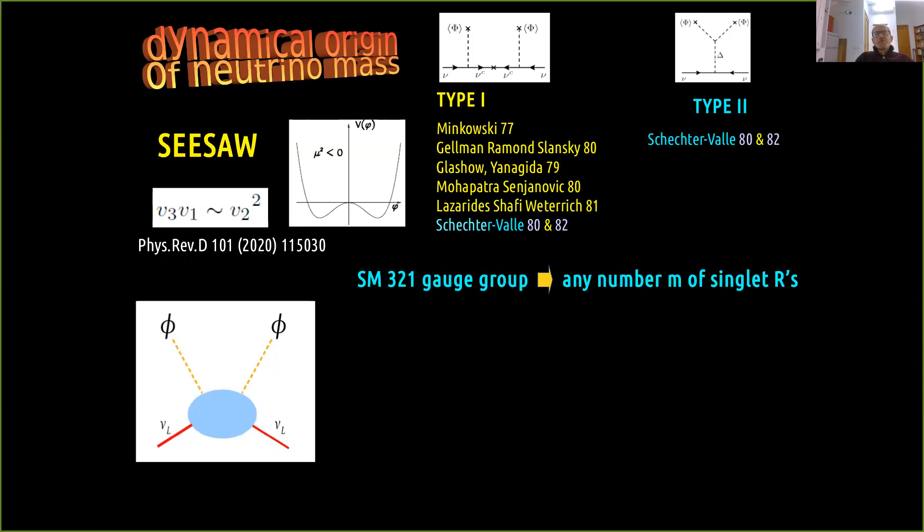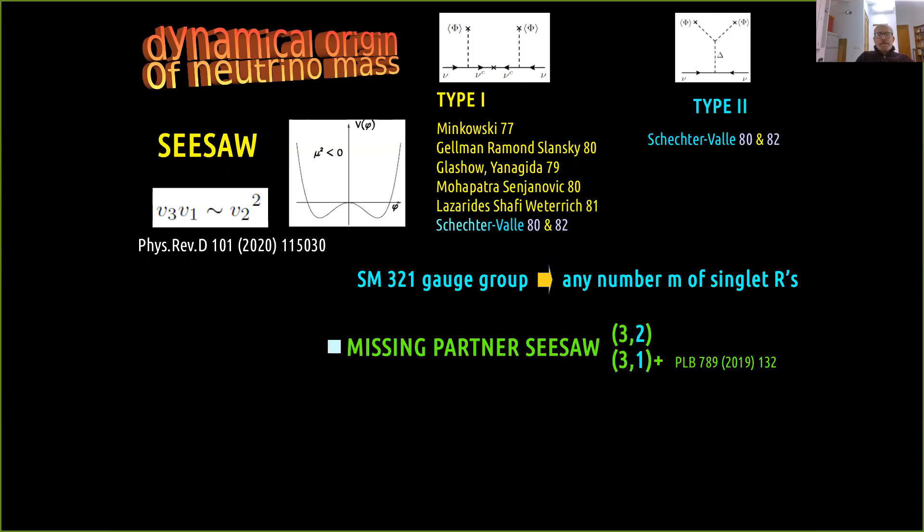Just by gauge symmetry. By classifying the seesaw just in terms of the standard model, we are completely free as to how many singlets we can consider. In particular, we may have less singlet neutrinos than doublet neutrinos so as to have a missing partner seesaw mechanism, in which one neutrino remains massless, leading to the m_beta_beta bound I just described. And perhaps more importantly, this class contains the template for the formulation of the scotogenic seesaw, which has been proposed last year as a way to combine the WIMP dark matter paradigm with the seesaw mechanism.